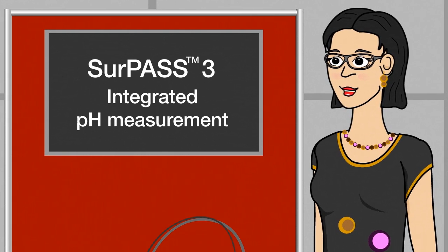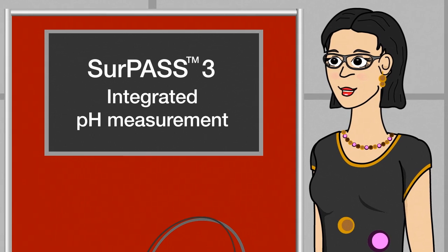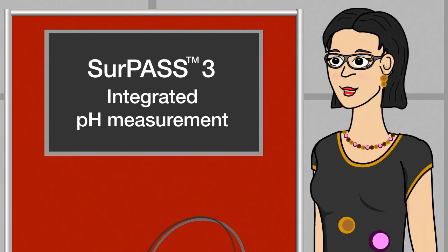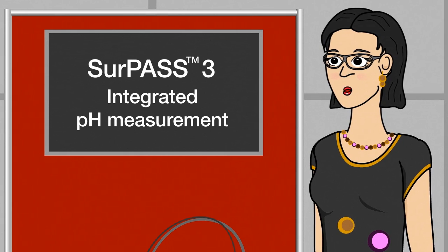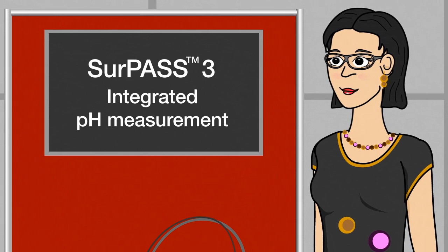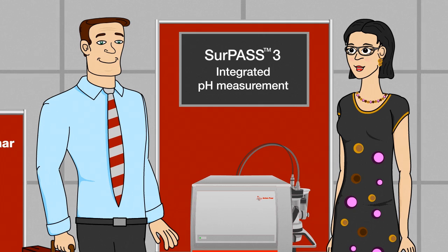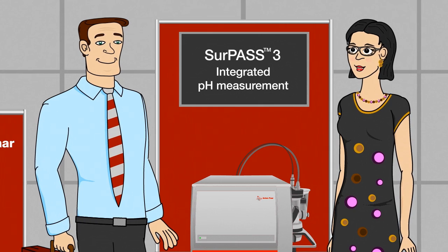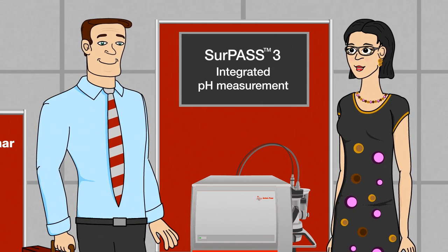Surpass has an integrated pH measurement. No other solution has that, even though the pH value is an essential factor in zeta potential analysis. Surpass automatically measures the pH value constantly.